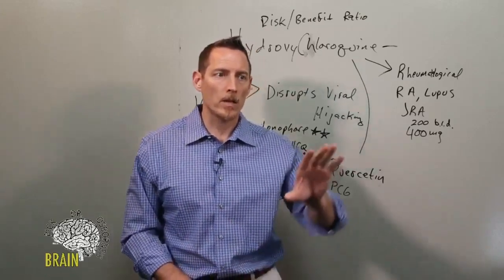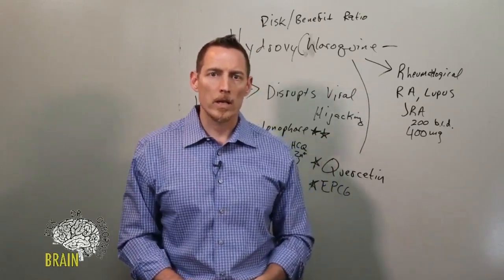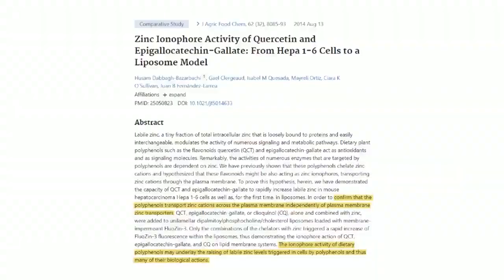You can see here again in this research study that the ionophore activity of dietary polyphenols may underlie the raising of label zinc levels triggered in cells by polyphenols, and thus many of their biological actions.